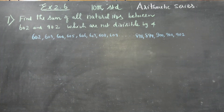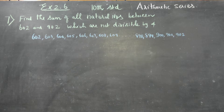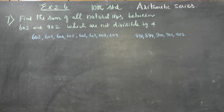From 602 to 902, what numbers will we take? They are asking us to find the sum of all natural numbers between 602 and 902. Between these two numbers, we will find all the numbers in between.